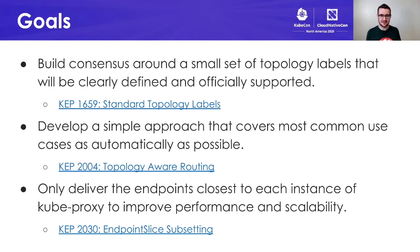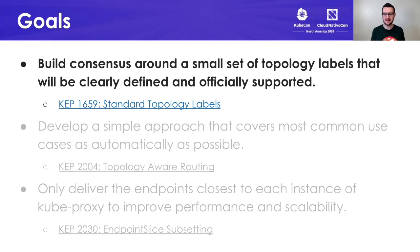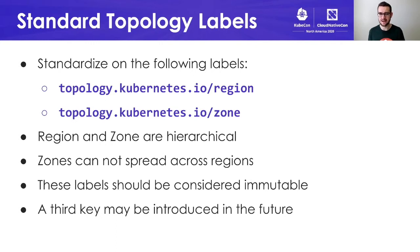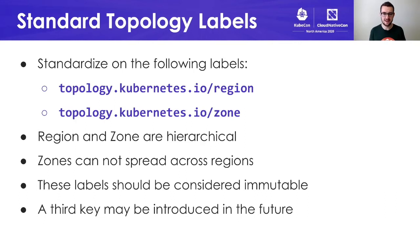So with that said, let's talk about the first KEP: building consensus around a small set of topology labels. In this KEP, we wanted to standardize on the following labels — one for region and one for zone. And we wanted to define region and zone as being hierarchical, meaning that zones could not be spread across multiple regions, but a region could contain multiple zones. We also wanted to state that these labels should be considered immutable, which is a very big deal and should dramatically simplify any implementations working with these labels. And we've left open the door for a third or maybe even fourth key to be introduced in the future, but for right now we want to keep it very simple.